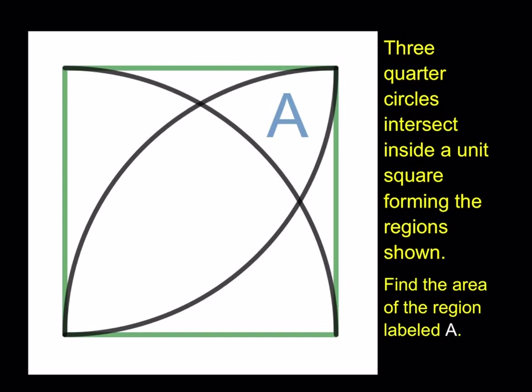We have three quarter circles that intersect inside a unit square, which means the side length is 1, forming the regions shown. Find the area of the region labeled A. So we have that little weird shape, kind of like a triangle, but the sides are round, not straight. We're going to find the area of that region.